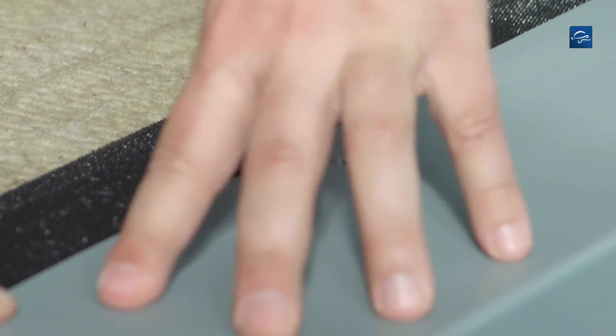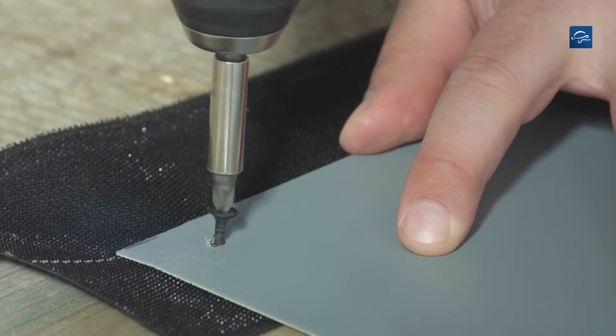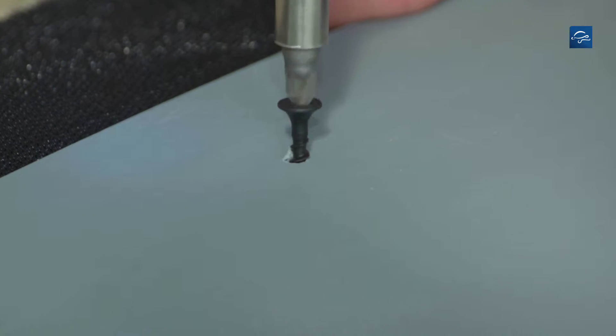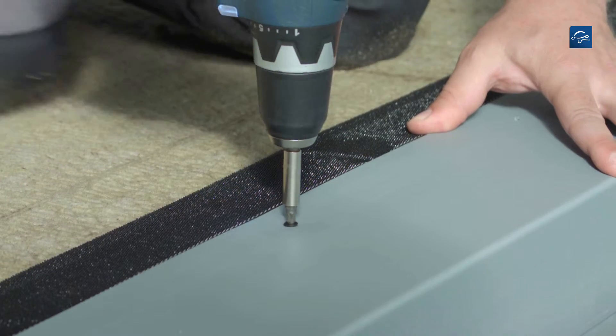When using the grip fix system, the grip fix strip is pushed under the bent metal sheet and fixed at a spacing of maximum 25cm.